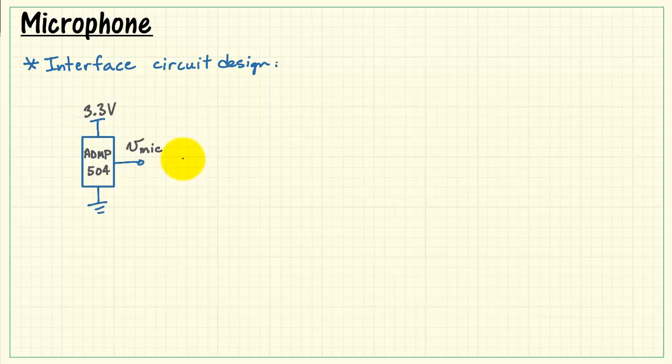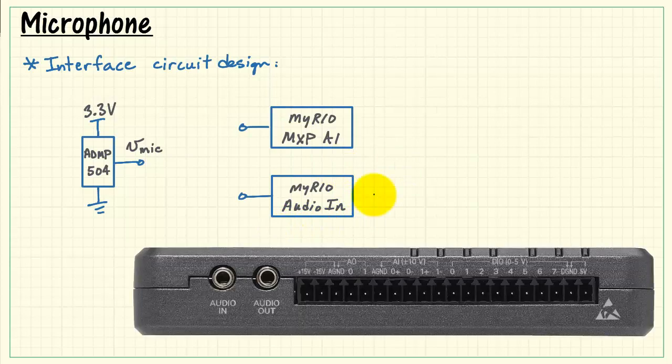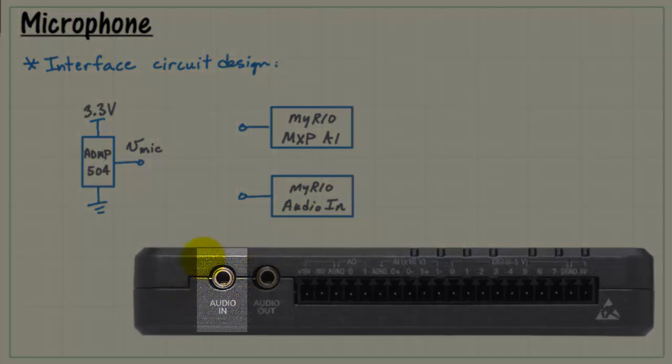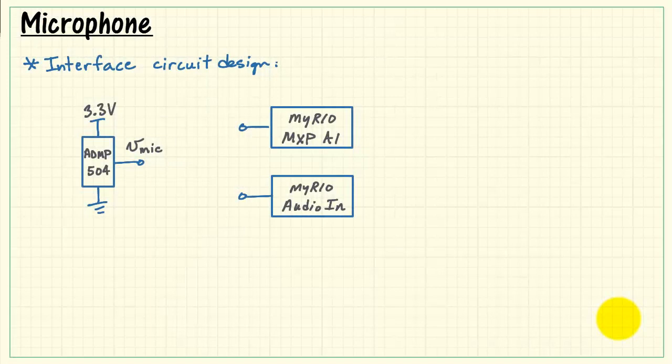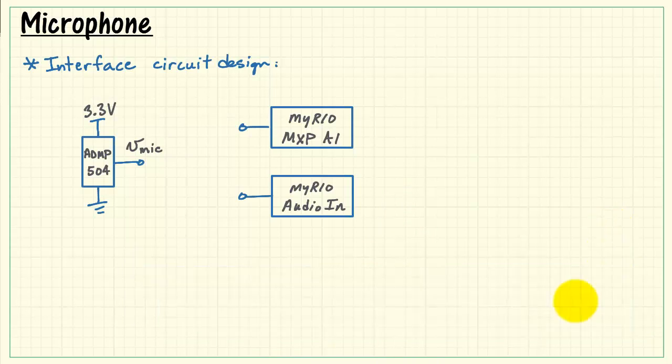Now let's take a look at some considerations for the design of the interface circuit. I'll begin with the microphone, and would like to show you how you can arrive either at the MXP analog input or the audio input. The audio input is located right here. It requires an 1/8-inch stereo jack connection. The analog inputs on the MXP side appear on both the A and B connectors, and we have four possible analog inputs on each connector.